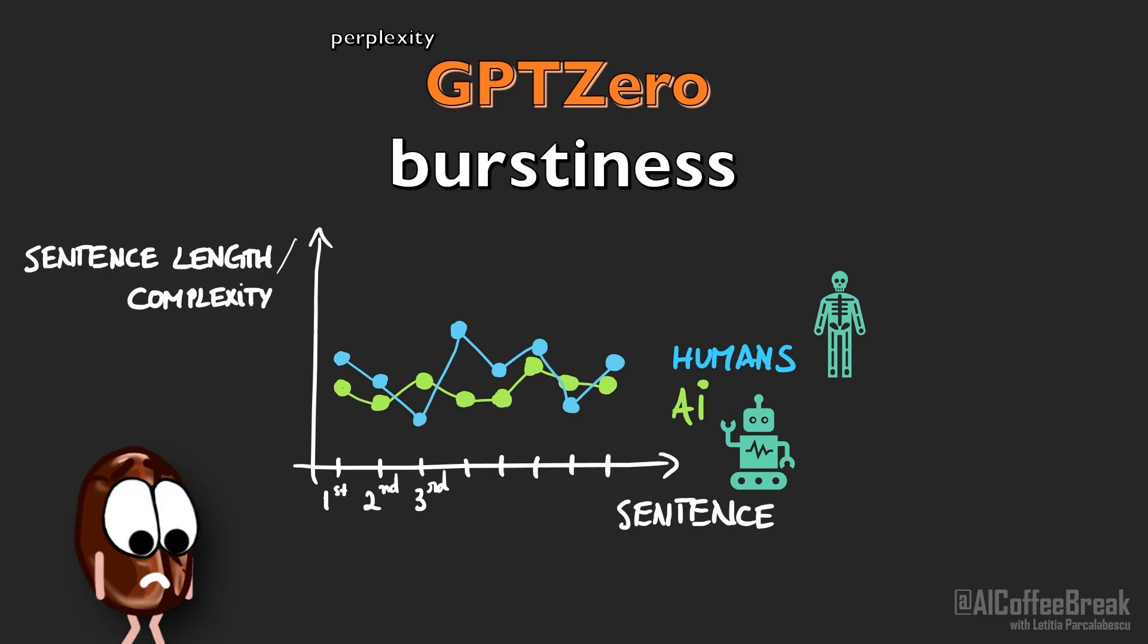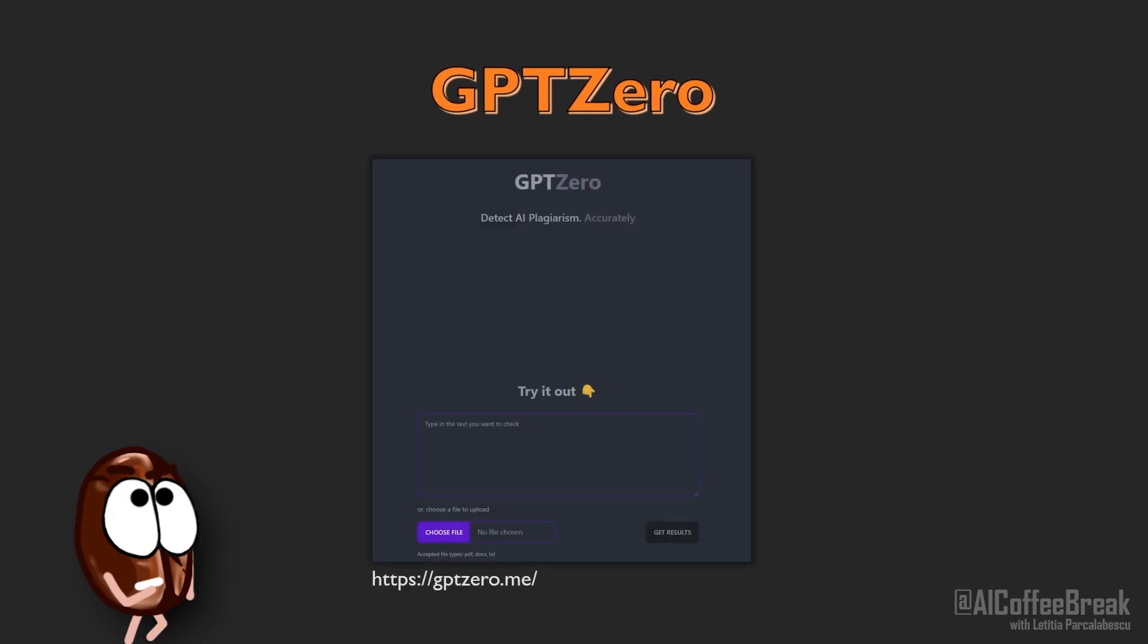A problem with GPT-0 is that it does not always work, and there are ways to fool it into saying that AI-generated text is human-written by introducing spelling mistakes or tiny grammar errors. Also, what if your writing has such a low burstiness that GPT-0 says it is AI-written? Nobody wants to be accused of that. Then how to detect AI-generated text with more confidence?